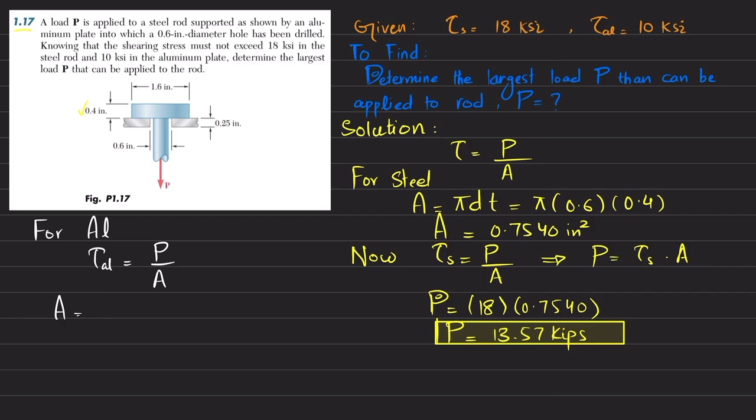Again this will be π D times T. So π, which is 3.1417, multiplied by diameter 1.6 and thickness 0.25. When you calculate it will be equal to 1.2566 square inch.